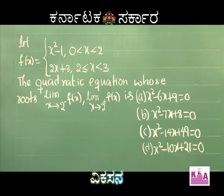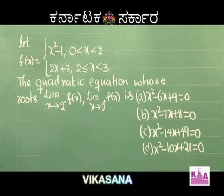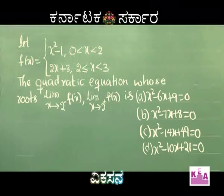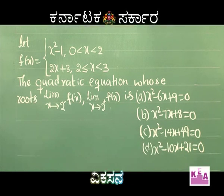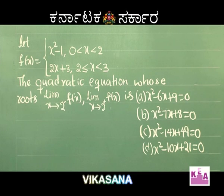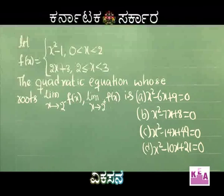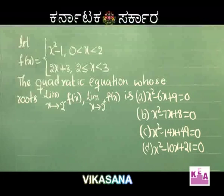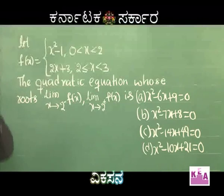Let f(x) = x² - 1 for 0 < x < 2, and f(x) = 2x + 3 for 2 ≤ x < 3. The quadratic equation whose roots are limit x→2⁻ f(x) and limit x→2⁺ f(x) is: A) x²-6x+9=0, B) x²-7x+8=0, C) x²-14x+49=0, or D) x²-10x+21=0.